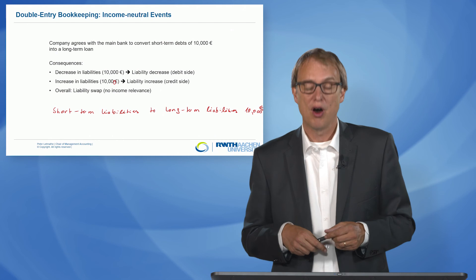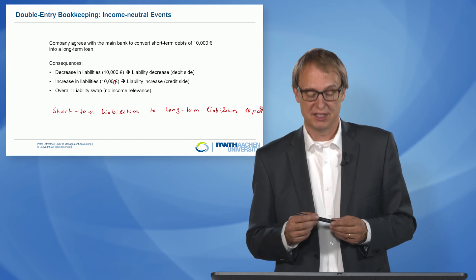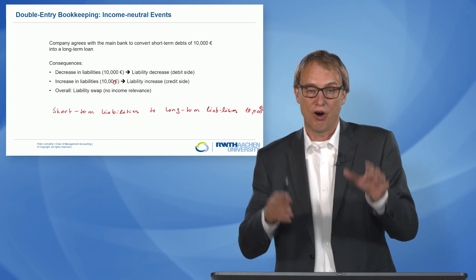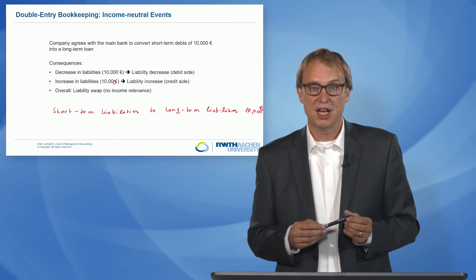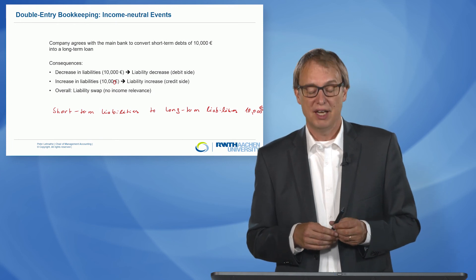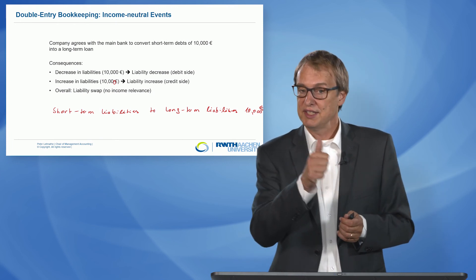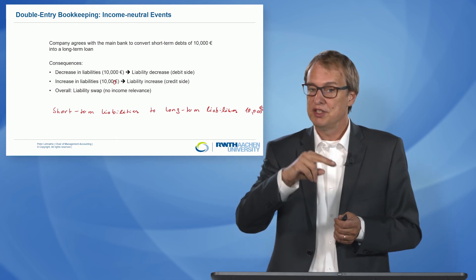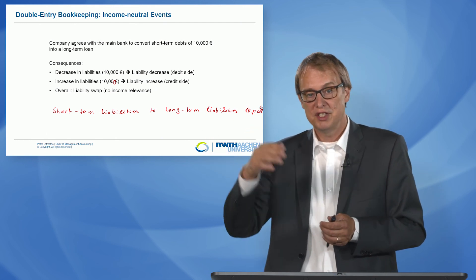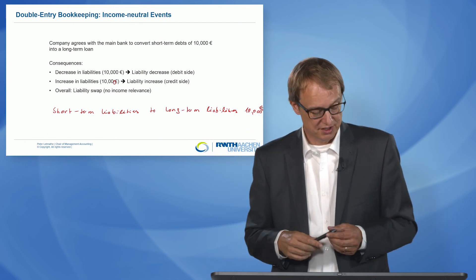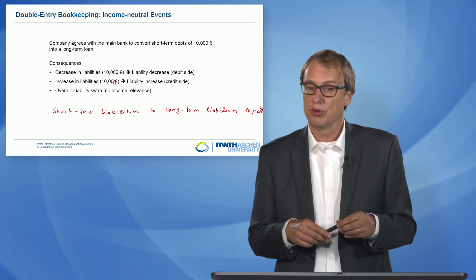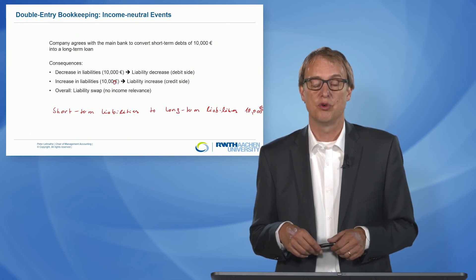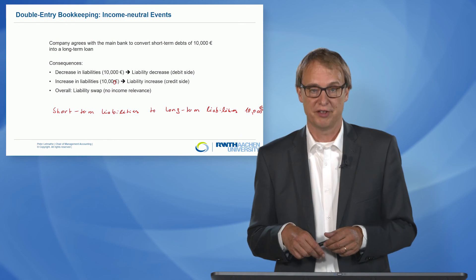So what you have learned is how to handle all cases that are income neutral or income irrelevant: asset swaps, liability swaps, balance sheet contractions, and balance sheet extensions, and how to make the book record according to the concept of double entry bookkeeping. Thank you very much.